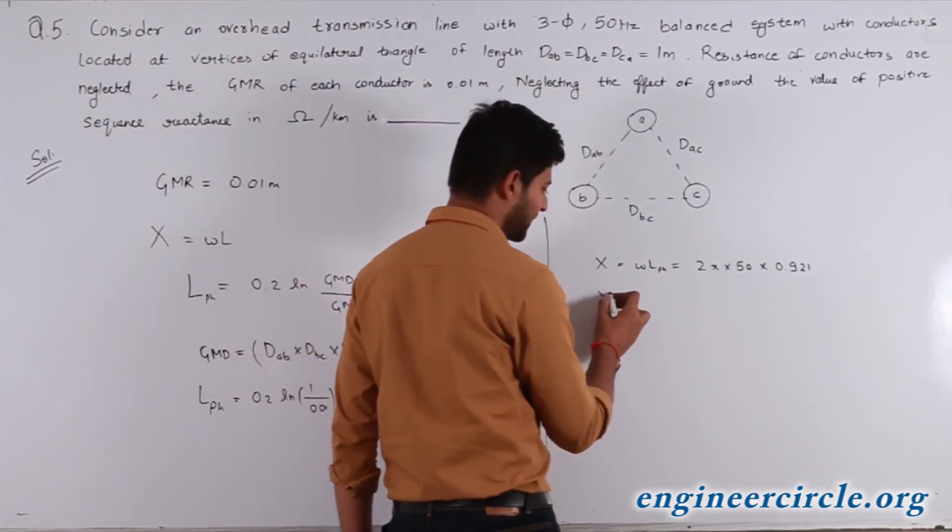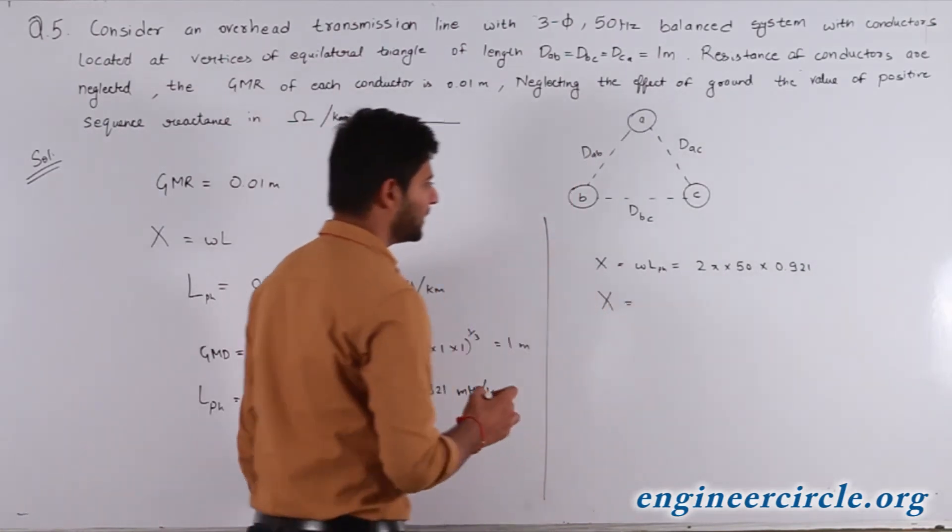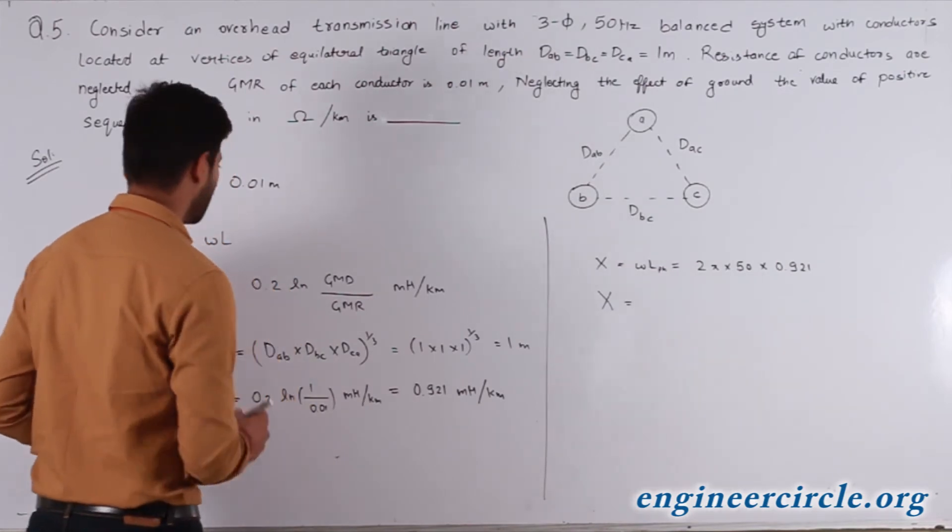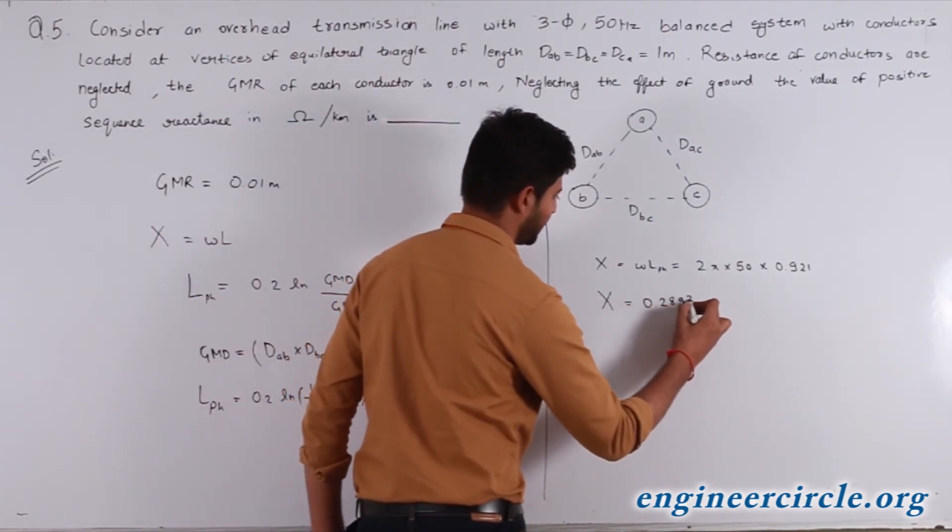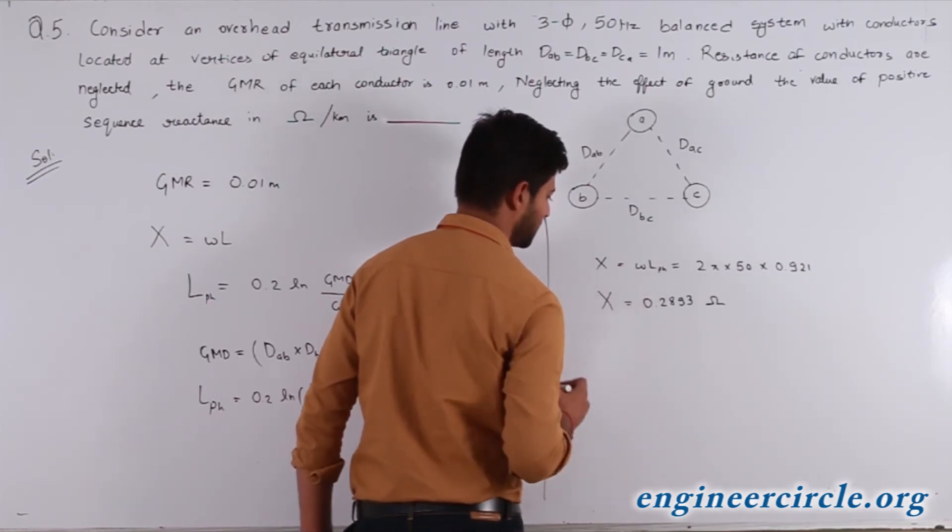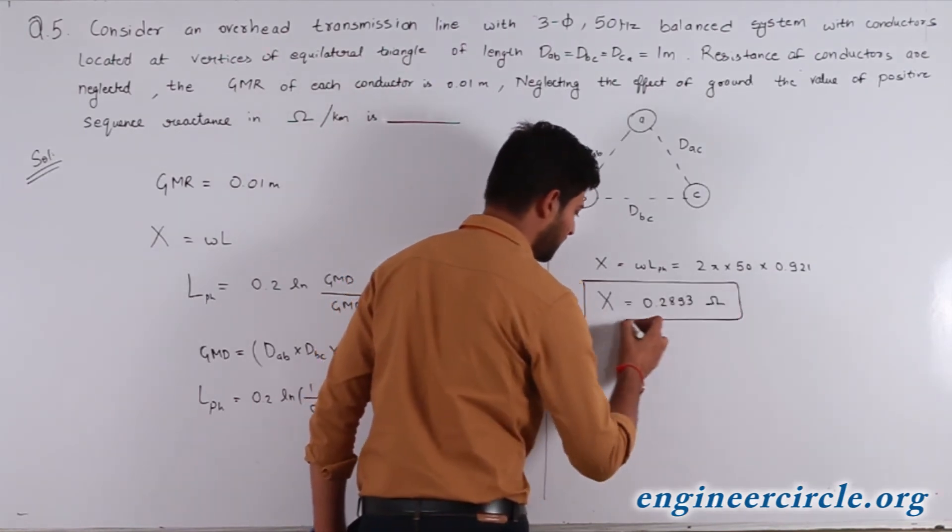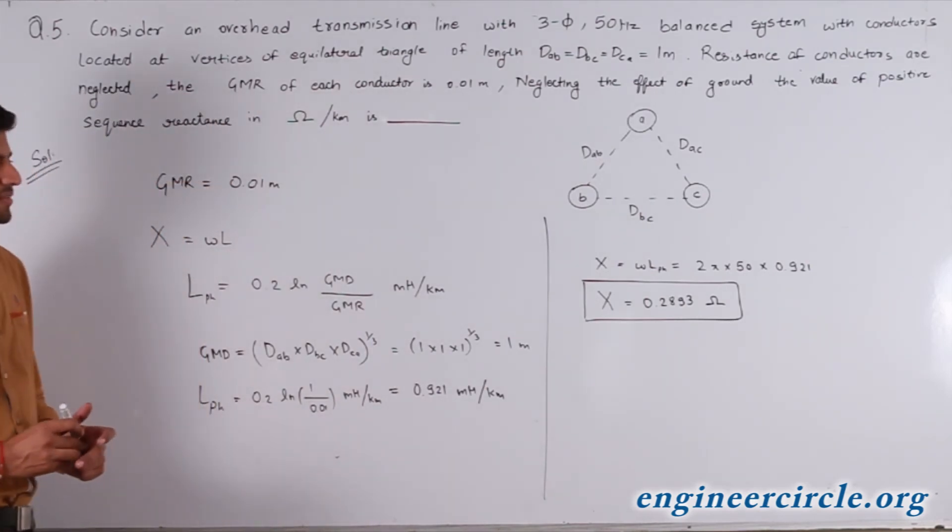So solving this, we finally get the value of x that comes out to be 0.2893 ohms. This is the value of our positive sequence reactance and this is the answer.